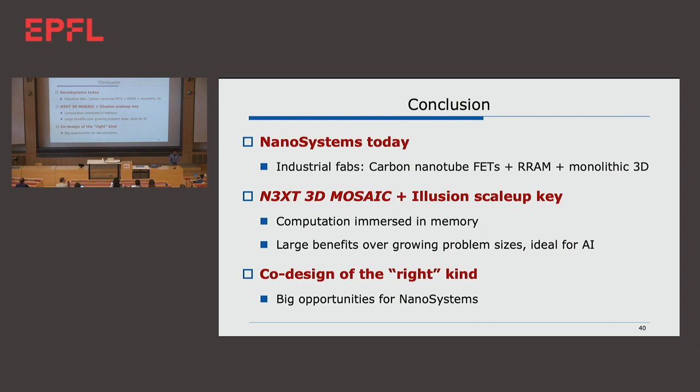The key point about multiplicative benefits: with the miniaturization wall, there will no longer be one single knob — making transistors smaller — that makes everything great. That being gone, if we can create multiple linear benefits that actually multiply at the system level, we have lots of opportunities. I showed quadratic because I have two linear benefits. There might be something else that could give another linear benefit. We have to be careful that these linear benefits really multiply, because many benefits do not multiply — and that is the problem. But still, I think there is a lot of opportunity there.